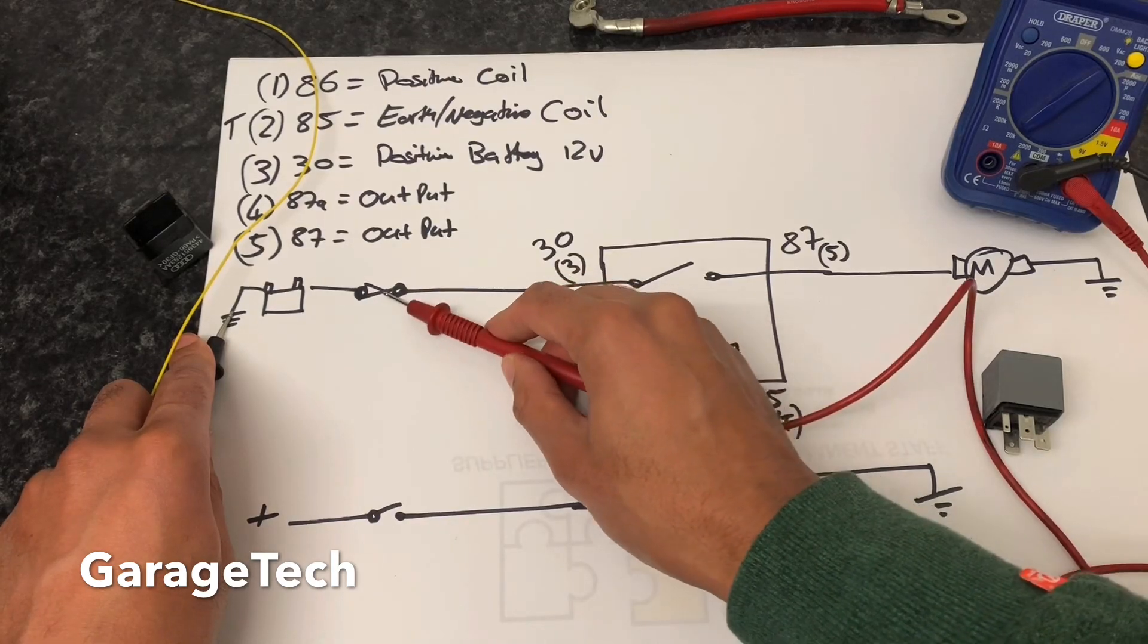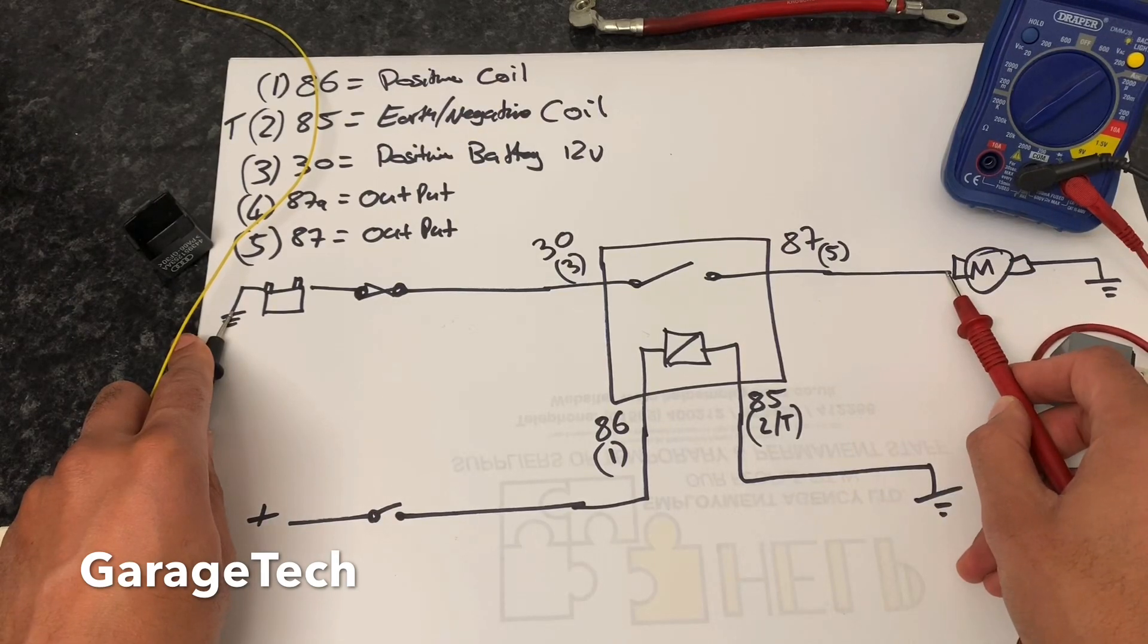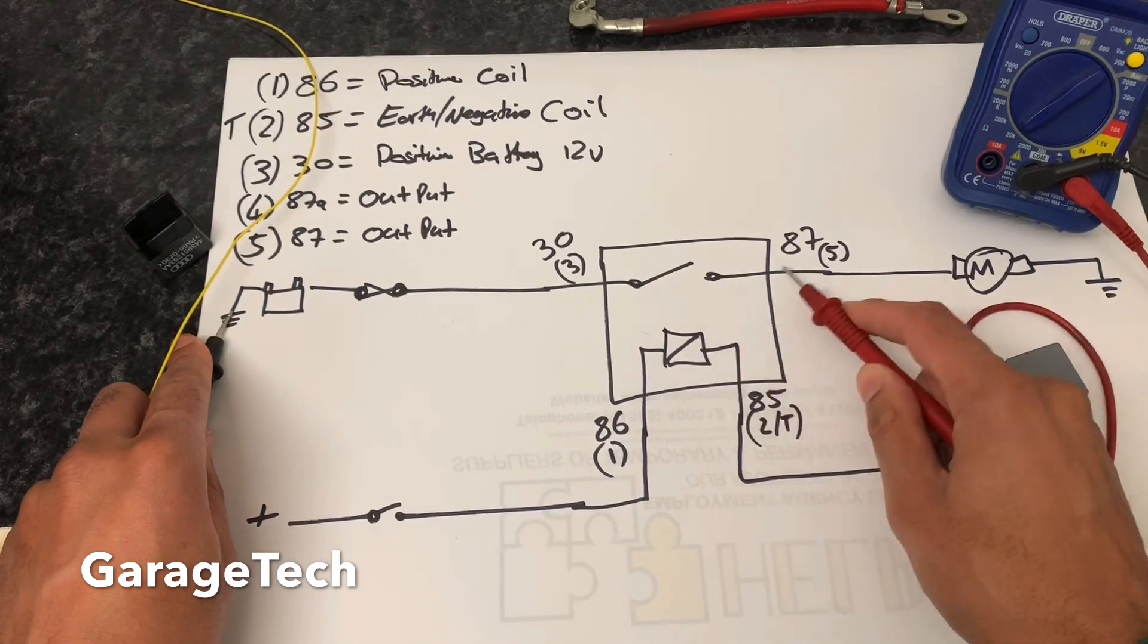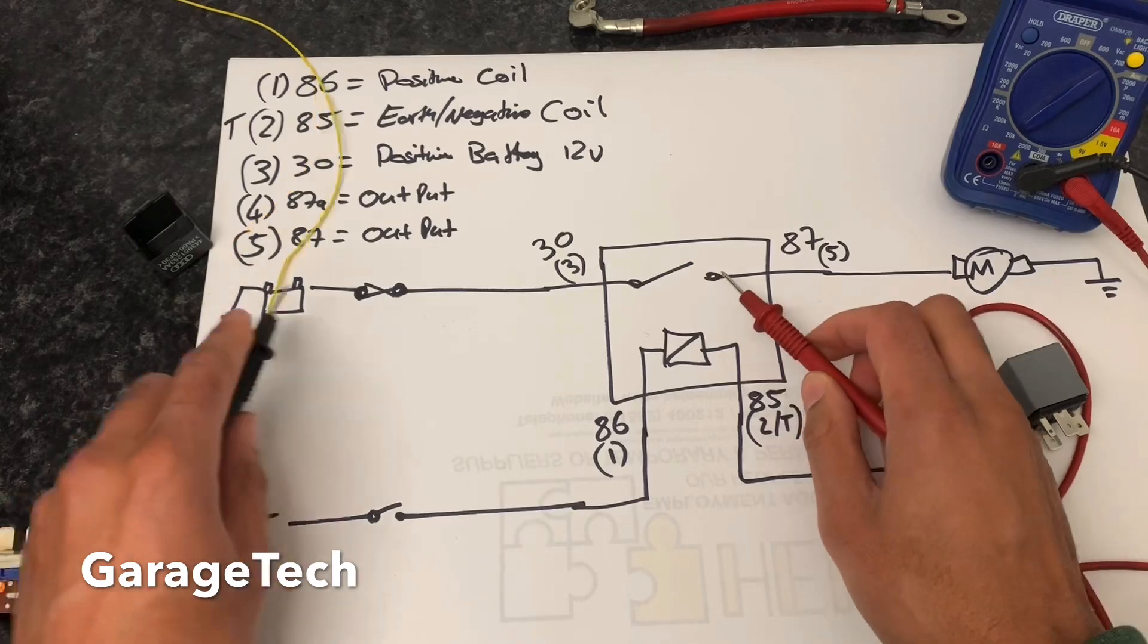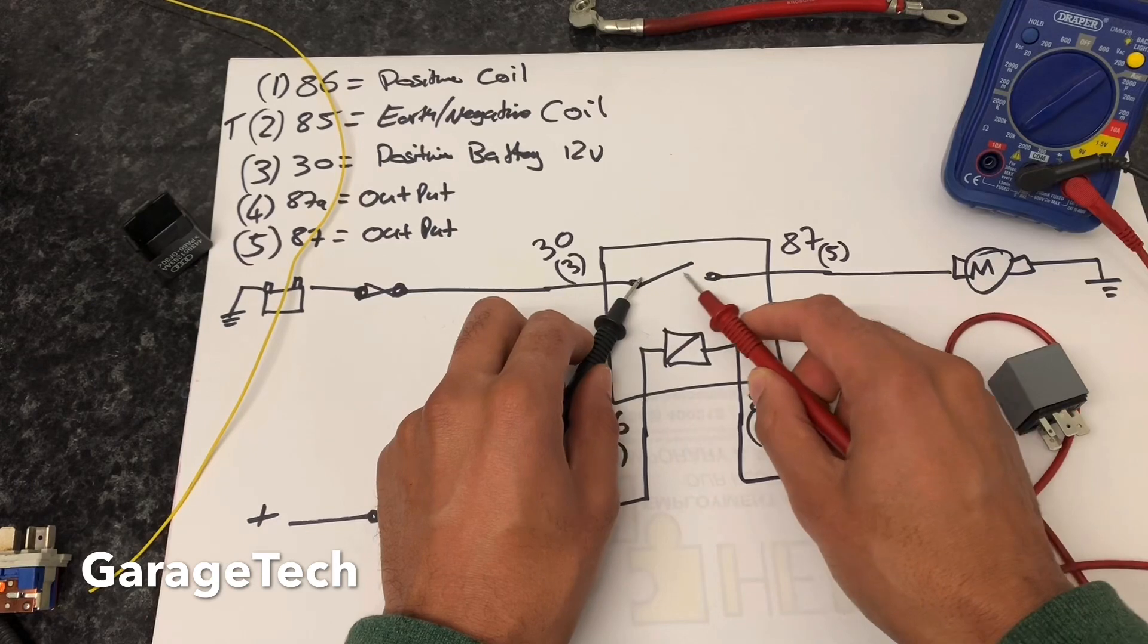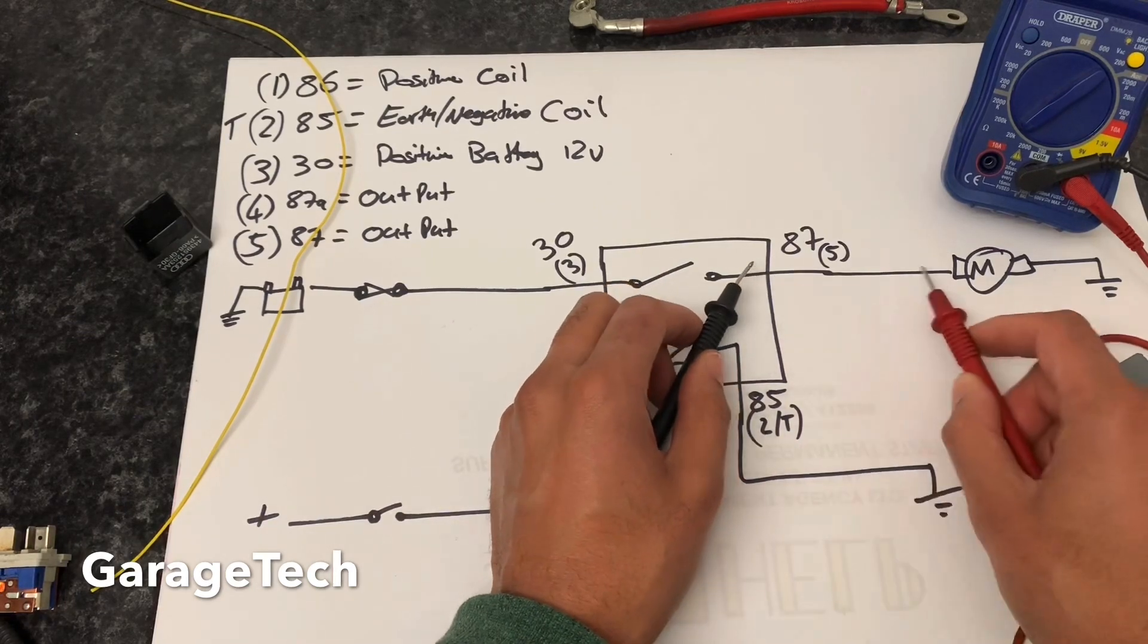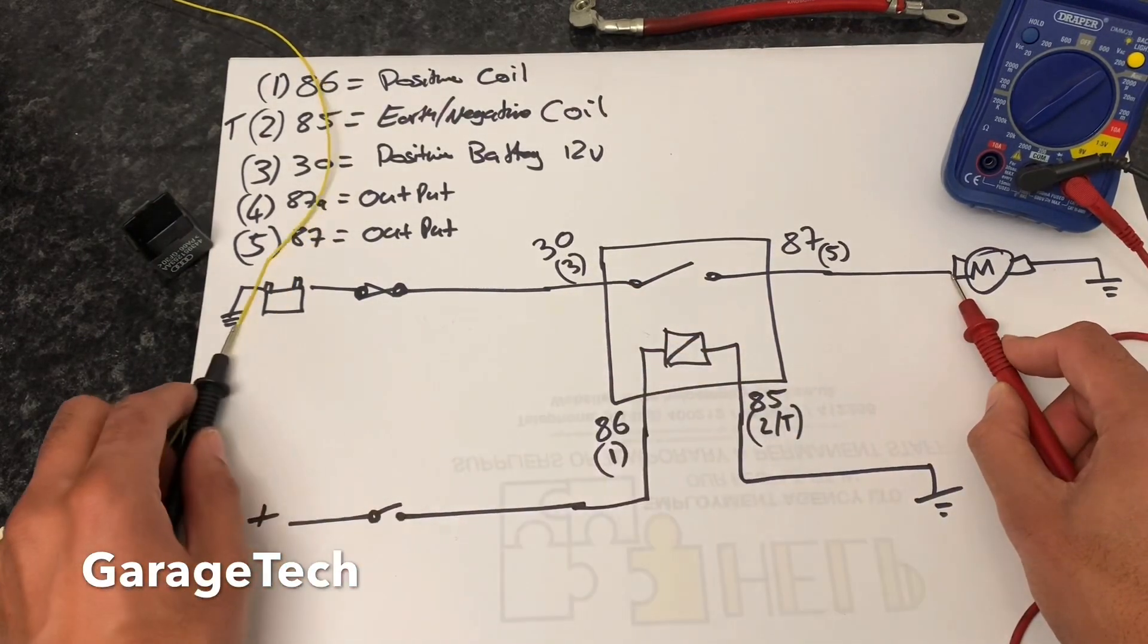Before you replace the fuse, check this piece of wire to make sure that it's not got a short to earth. If you've got your 12 volts here and this is working and switching, and you've got nothing coming out the back here, it's likely to be a problem with that switch. So you'd want to do that resistance check across that terminal just to make sure that your points are not pitted. If you've got 12 volts coming out of here, then you need to check between here and here to make sure that that voltage is coming down to your consumer.